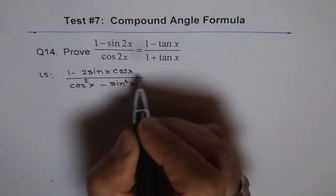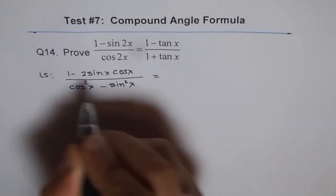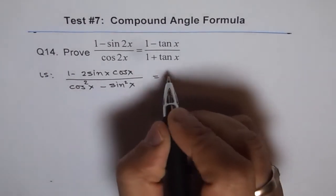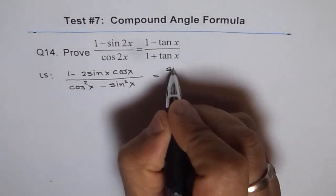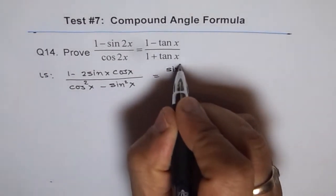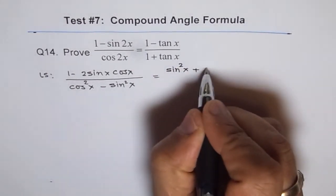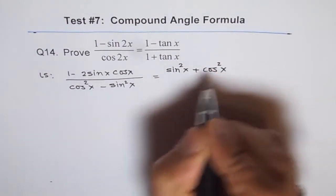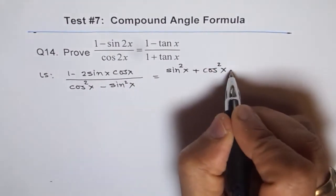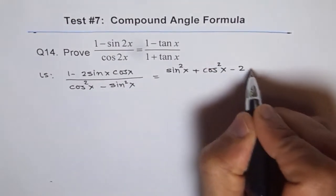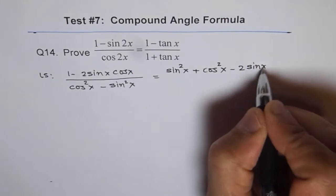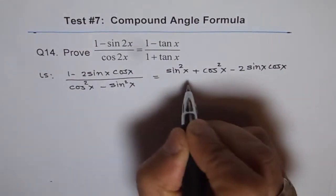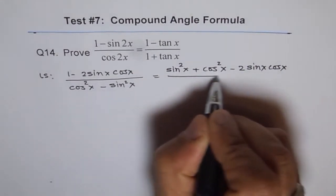Now we can write 1 as sine squared x plus cos squared x. So we have sine squared x plus cos squared x minus 2 sine x cos x in the numerator, divided by cos squared x minus sine squared x.